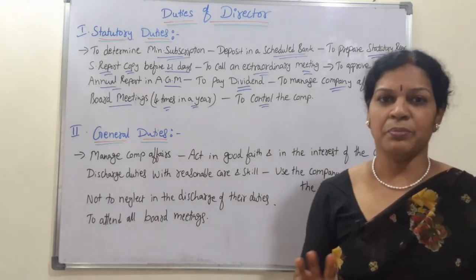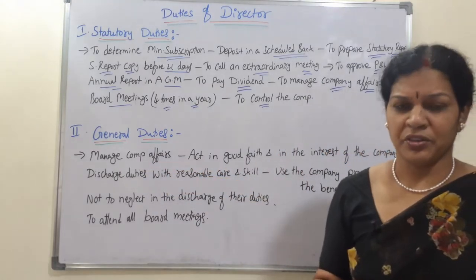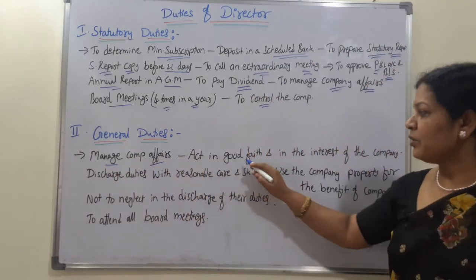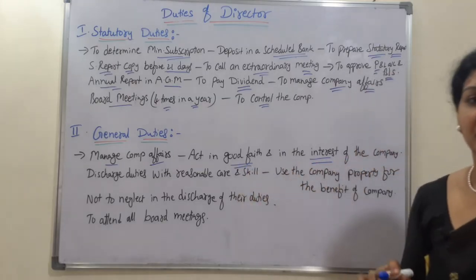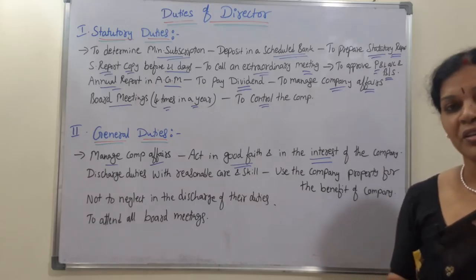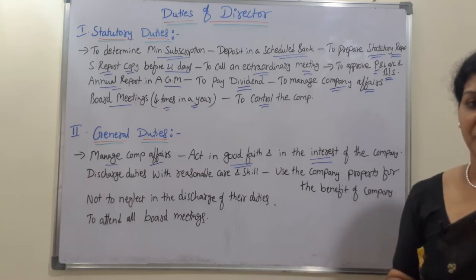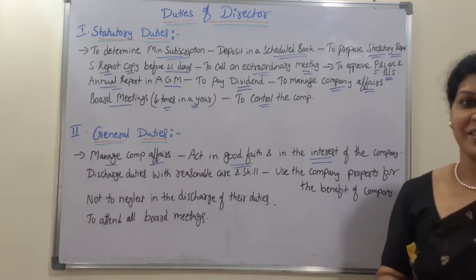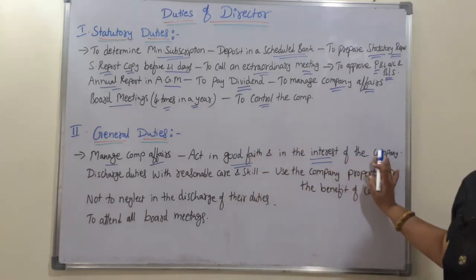Now for general duties — these need not be expressly stated, but every director must know them. The first general duty is to manage the company's affairs carefully. The second is to act in good faith and in the interest of the company. Good faith means the director must be transparent and work for the benefit and profit of the organization, trusting the organization he manages.